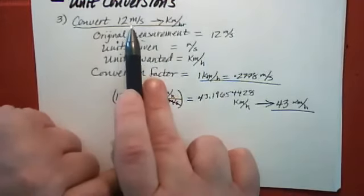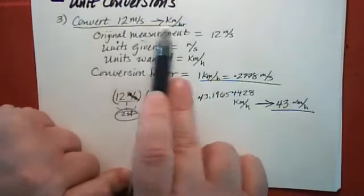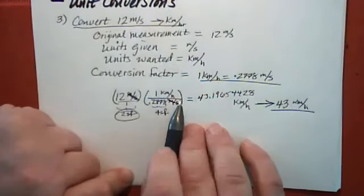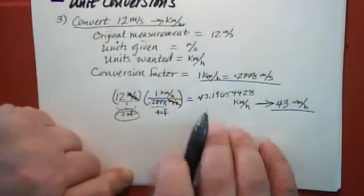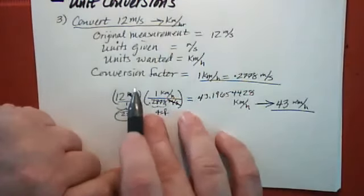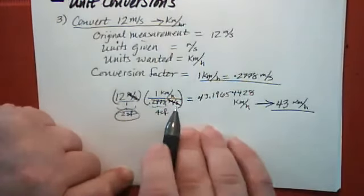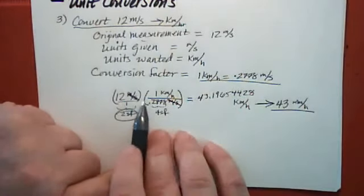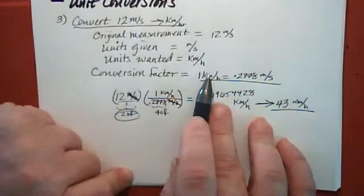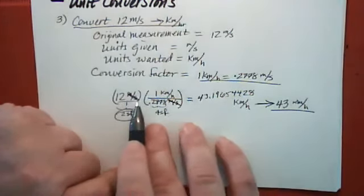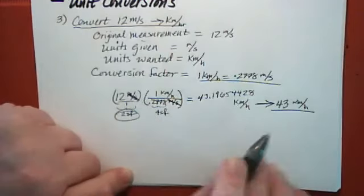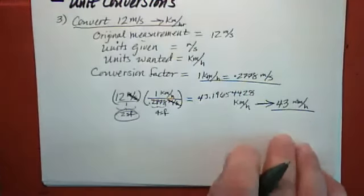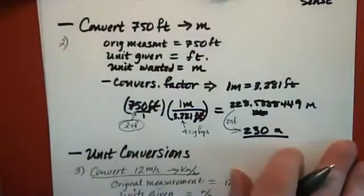When you have compound units like meters per second, you can change them to other compound units like kilometers per hour in one step if you have the right conversion factor — one that converts the top and bottom unit simultaneously. Otherwise, you could change meters to kilometers and seconds to hours separately and get the same result, but that gets more complicated, so I'm going to wait before showing that approach.